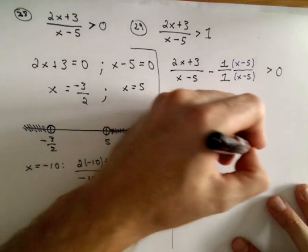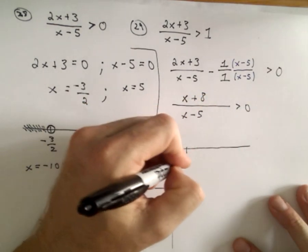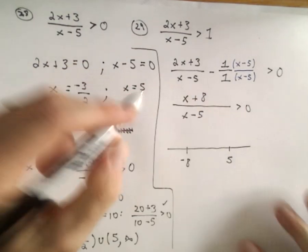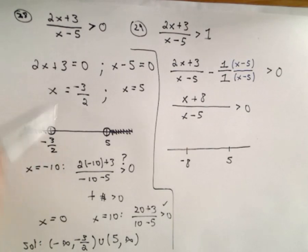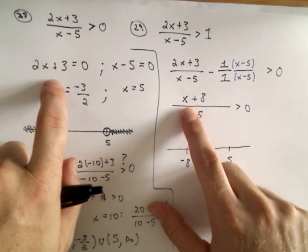It's easy to see that if you put negative 8 into the numerator, you would get 0. If you plug 5 into the denominator, well, in this case, it would make it undefined, but in line with what we said a second ago, right? We take the numerator, set it equal to 0. We take the denominator, set it equal to 0.